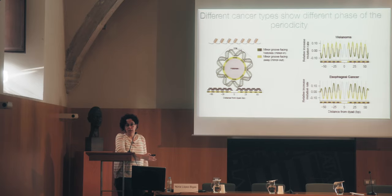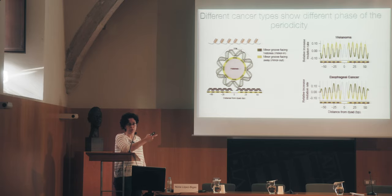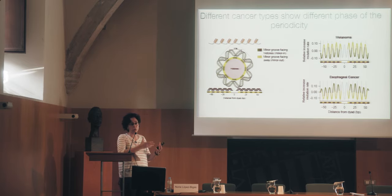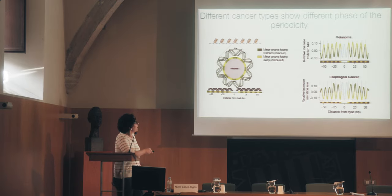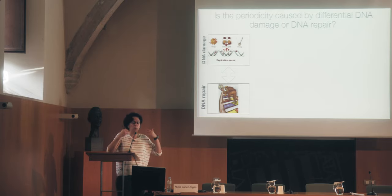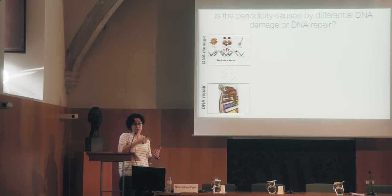We can conclude that the way DNA wraps around nucleosomes has a major impact on how mutations from different processes accumulate in the DNA, but this effect is different depending on the process. The question is why we have this periodicity. We always think about the interplay between DNA damage and DNA repair. It could be that DNA damage is placed differentially every 10.3 base pairs, or that DNA repair activity is periodic every 10.3 base pairs — or a combination of the two.